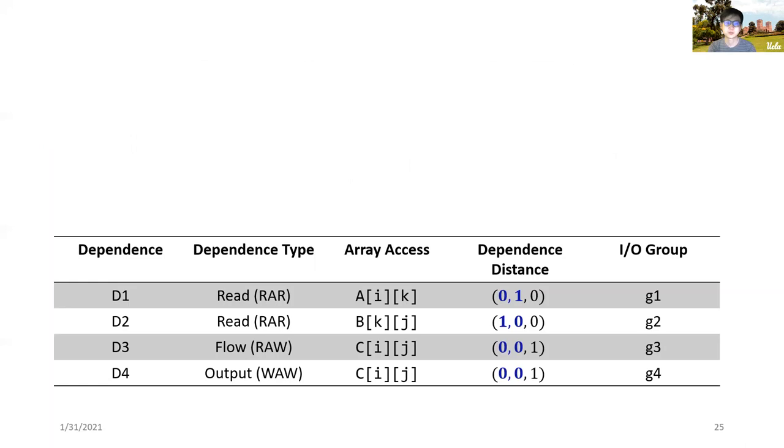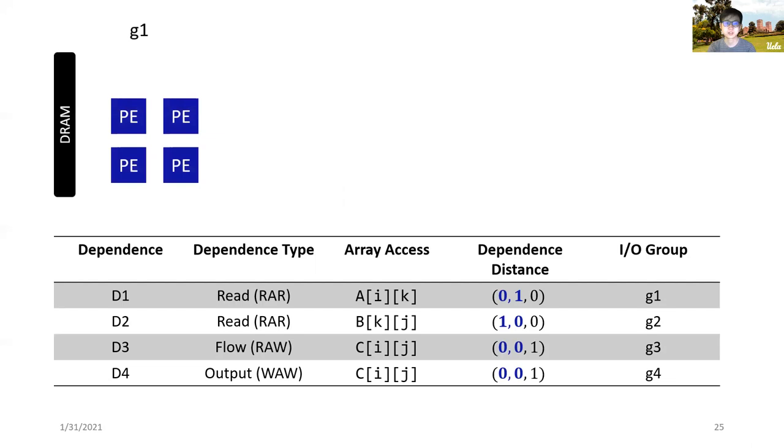So for each I/O group, we can generate one I/O module to transfer data between the array and the external memory. As an example, for the first I/O group, G1, the data dependence vector on the space loops is 0,1, which means that data are reused horizontally.